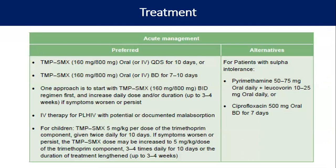Treatment of Cystoisosporiasis is cotrimoxazole — first start double strength cotrimoxazole twice daily, then depending on severity and response it can be increased to 3–4 times per day. Duration of treatment is 7–10 days; in severe cases it can be increased to 3–4 weeks. Alternative medicines are pyrimethamine 50–75 mg orally plus leucovorin 10–25 mg orally once a day; another alternative is ciprofloxacin 500 mg twice daily for 7–10 days.